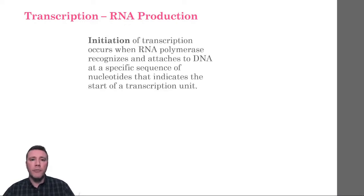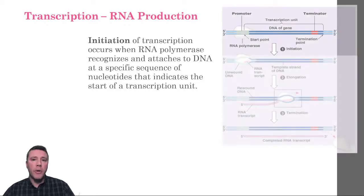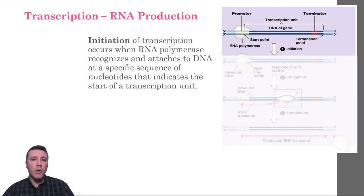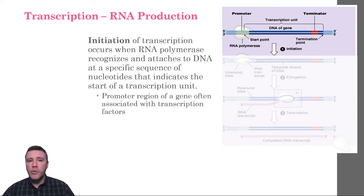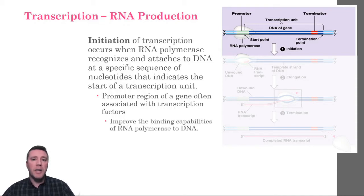The initiation of transcription begins when RNA polymerase binds in a precise location on the promoter region of a gene. Promoters are located near the transcription start sites of genes and can be hundreds of base pairs long. Although prokaryotic promoters are relatively simple, allowing RNA polymerase to bind directly to them, in eukaryotes they are much more complex and not as well understood. In eukaryotes, a collection of proteins called transcription factors help to regulate the binding of RNA polymerase to the double helix. Additional regions of DNA, as well as other proteins, interact to form the initiation complex of transcription.